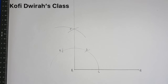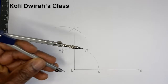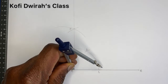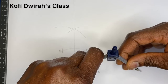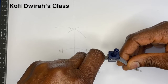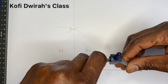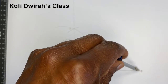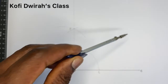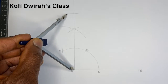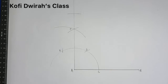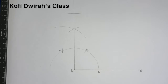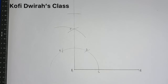Then, after drawing this line, at point A you open your compass to measure the length from point A to point B. Then you draw an arc. This gives you another side of the square.